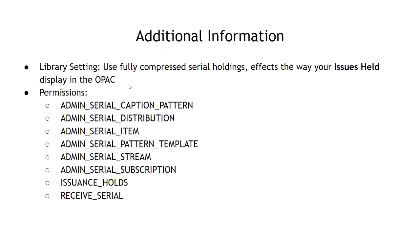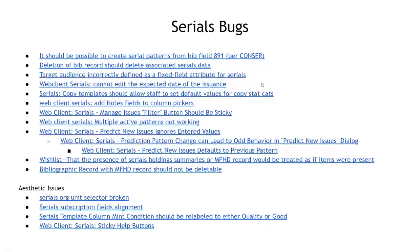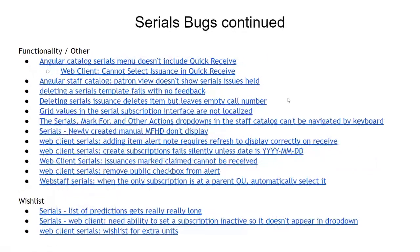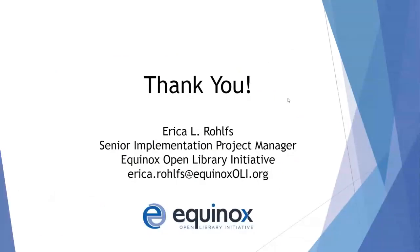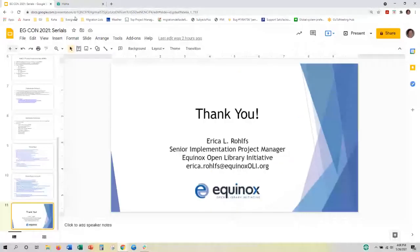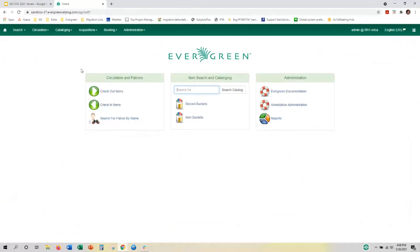These are all the current serials bugs. Yesterday during the serials interest group, we went over quite a few of them. I highly encourage everyone to look over these bugs and add your feedback. Serials needs community love and voices. Please don't hesitate to look at these bugs and add heat if they affect you or add opinions — some of them are specifically asking for community input. So we're going to escape out of the PowerPoint and jump into our 3.7 sandbox.